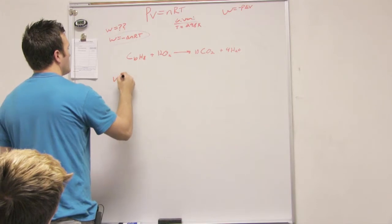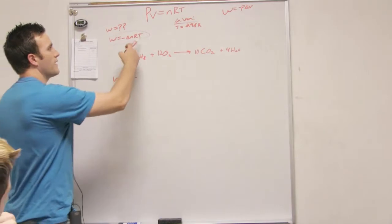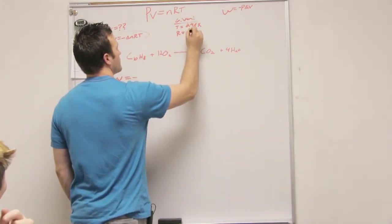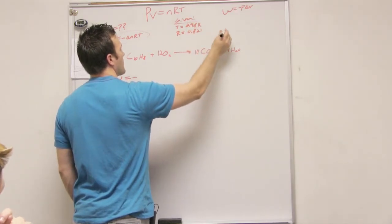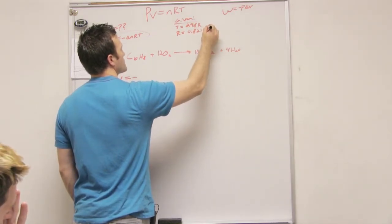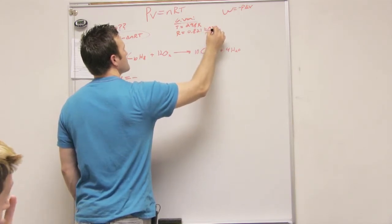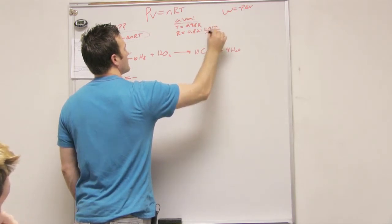And we know the constant R. We know R. Yeah. So. What is it? 0.0821. Good. And what's the units? 0.0821. That is liters times atmosphere over moles Kelvin. Yeah. Okay.